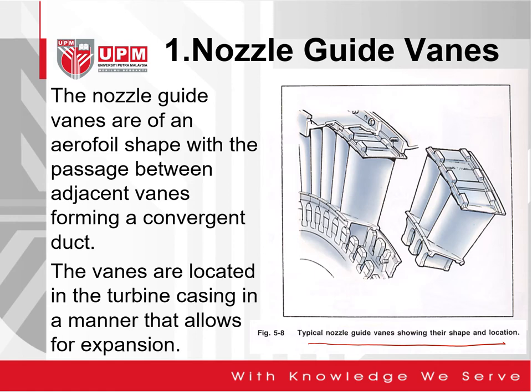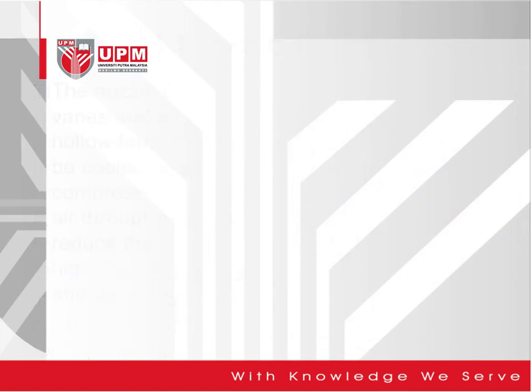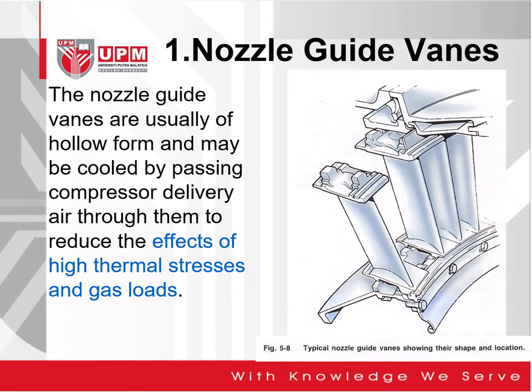The vanes are located in the turbine casing in a manner that allows for expansion. The nozzle guide vanes are usually of hollow form and may be cooled by passing compressor delivery air through them, to reduce the effects of high thermal stresses as well as the gas load. Some designs of nozzle guide vanes allow air to flow through them.